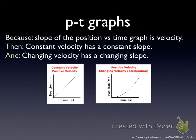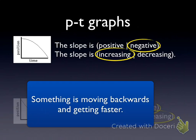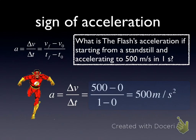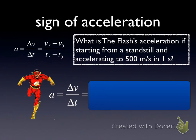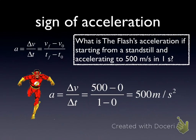Recall that acceleration is change in velocity divided by change in time. Let's work a sample calculation to figure out the acceleration for the Flash. He starts from a standstill and accelerates to 500 meters per second in one second. Change in velocity divided by change in time. That's an acceleration of 500 meters per second squared. That's a positive acceleration. Notice he's getting faster in this case.